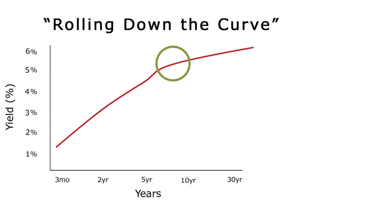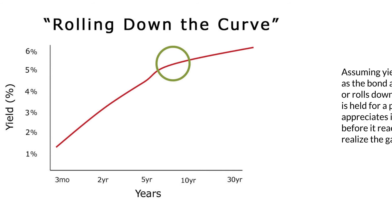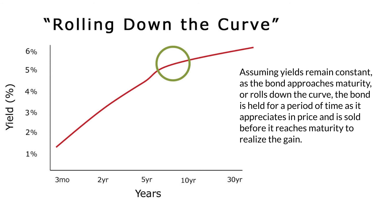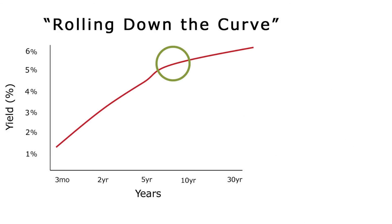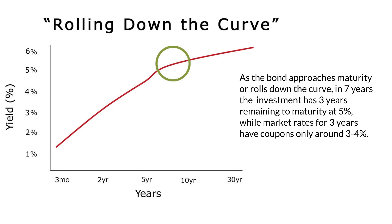Investors also look to make an extra return with one portfolio strategy known as rolling down the curve. This is when the yield curve is normal or slopes upward. Assuming yields remain constant as the bond approaches maturity or rolls down the curve, the bond is held for a period of time as it appreciates in price and is sold before it reaches maturity to realize the gain. For example, assume an investor bought a 10-year treasury at around 5%. As the bond approaches maturity, or rolls down the curve, in let's say 7 years, and assuming rates stay constant, he is now holding an investment with 3 years remaining at maturity at 5%, while market rates for 3 years have coupons only around 3-4%. He has an above-market rate and would be able to sell this to another investor at a gain because of the higher coupon.